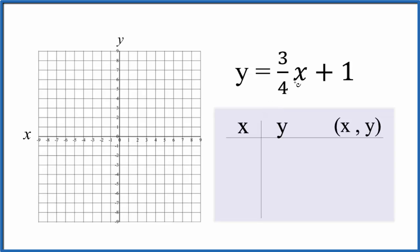I'm going to start with zero because three-fourths times zero, that's just a zero. Zero plus one is one. I can choose any values for x that I want. They'll all fall on the line y equals three-fourths x plus one.